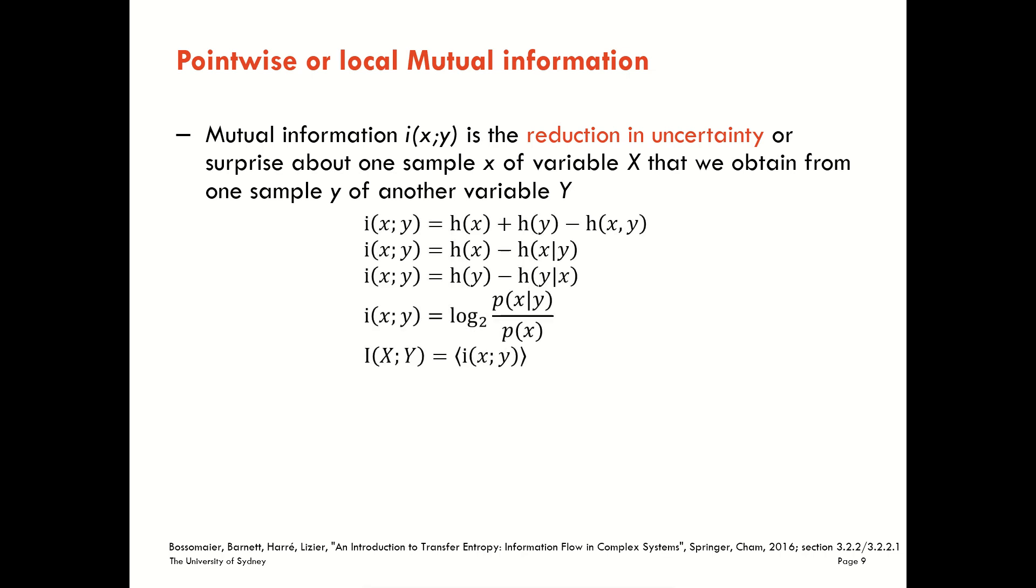From the pointwise perspective, all of our equations for mutual information between X and Y stay the same. We're just changing from looking at variables to looking at realizations of those variables. All of the sums and differences of Shannon information contents are the same as the sums and differences of Shannon entropies. And of course, the average mutual information is still an average over the pointwise values.